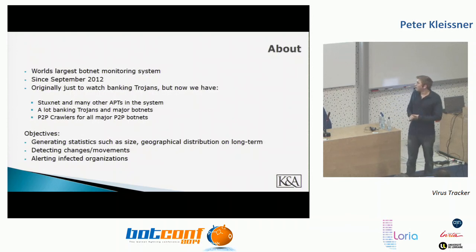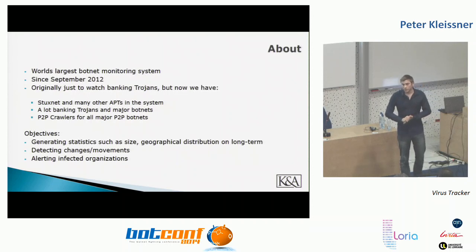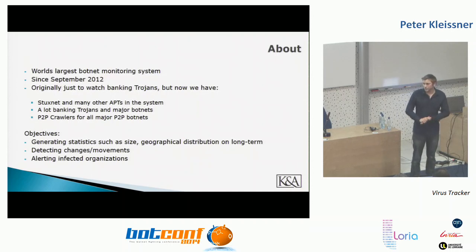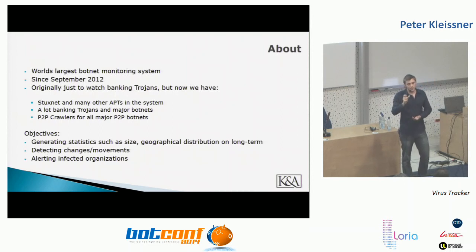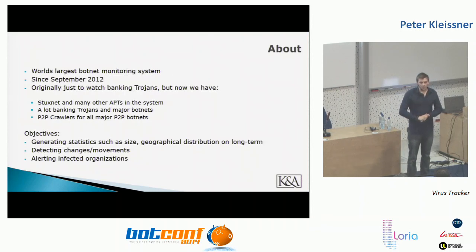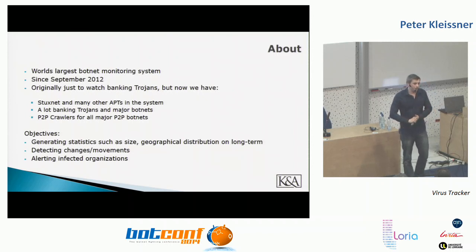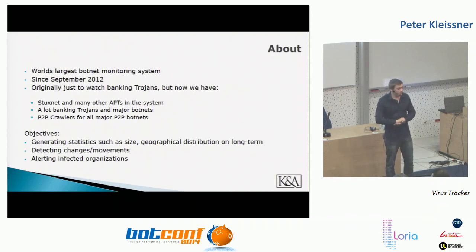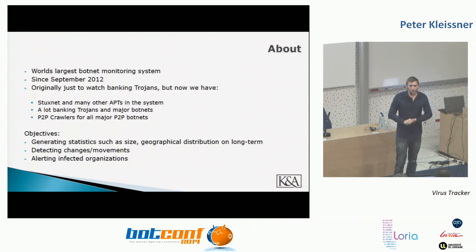We have over seven thousand domains pointing to our server. We don't only implement sinkholes for HTTP Trojans but also for peer-to-peer Trojans — we write active peer-to-peer crawlers that crawl the network and store all infections in the database. Our approach is a bit different from Anubis Networks: instead of analyzing network traffic to find new domains, we go to sites like VirusTotal and KernelMode, check the command-and-controls, and sinkhole available ones. Everything is stored in a database with automation and classification.